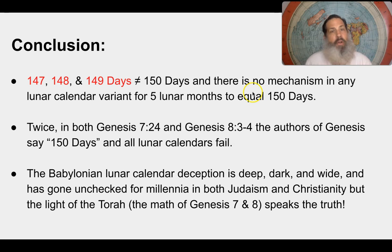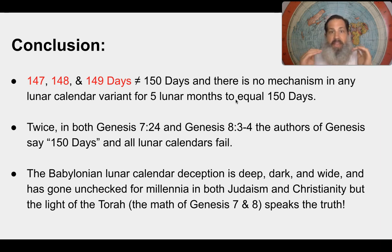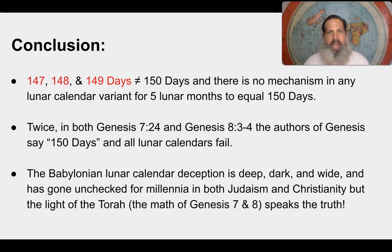To conclude: there is no mechanism in any lunar calendar variant to make five lunar months — five lunar cycles — equal 150 days. It simply does not work. Even adding an extra day, you really get only 147 to 149 days, not 150. The Babylonian lunar calendar deception is deep, dark, and wide and has gone unchecked for millennia in both Judaism and Christianity. But the light of the Torah is the math of Genesis 7 and 8, which speaks the truth.